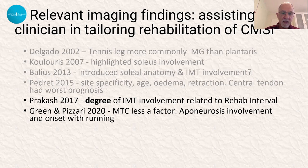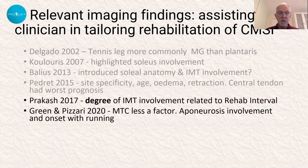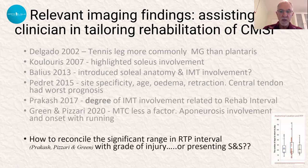Subsequent work identified the degree to which the intramuscular tendon was involved, with more serious involvement of this structure associated with a greater rehabilitation interval. That was taken further by Tanya and Brady Green, who demonstrated first that the medial or central tendon was perhaps less an unidentifiable discrete feature — it appeared to be spread across all the different aponeuroses or intramuscular tendons — and also that it wasn't just the involvement of the intramuscular tendon but also its combination with onset during running.